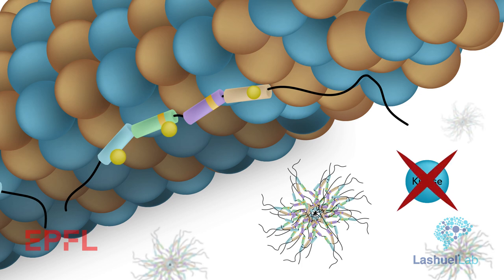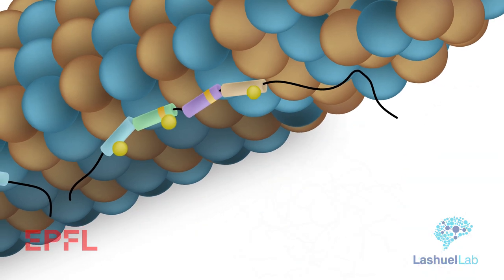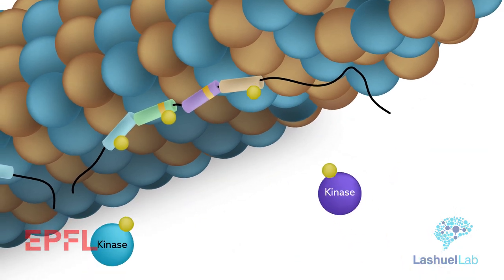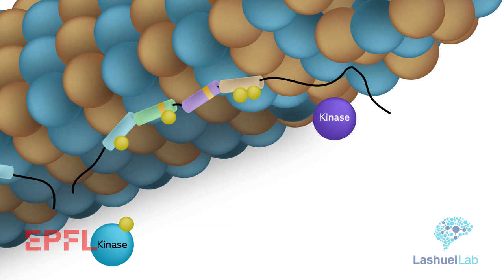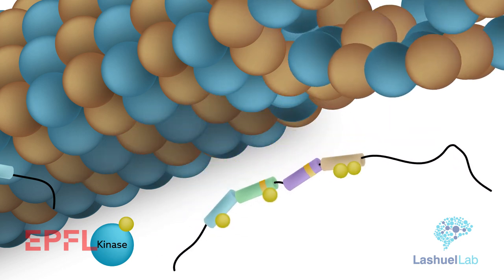Inhibitors of kinases that regulate phosphorylation-dependent dissociation of tau from microtubules could provide a viable strategy for stabilizing the native state of tau and inhibiting its aggregation. Studies are currently underway to explore this approach and to map the different phosphorylation events that directly or indirectly disrupt the binding of tau to microtubules.